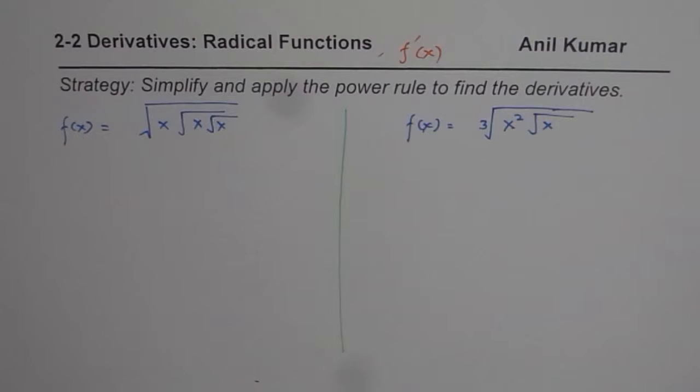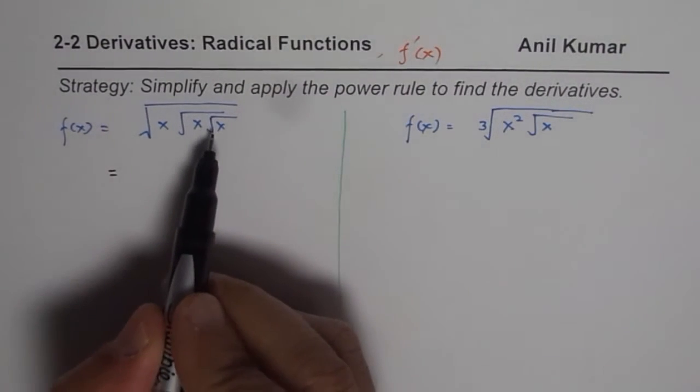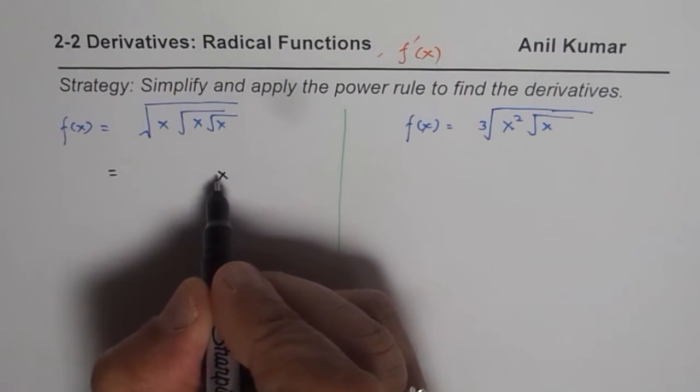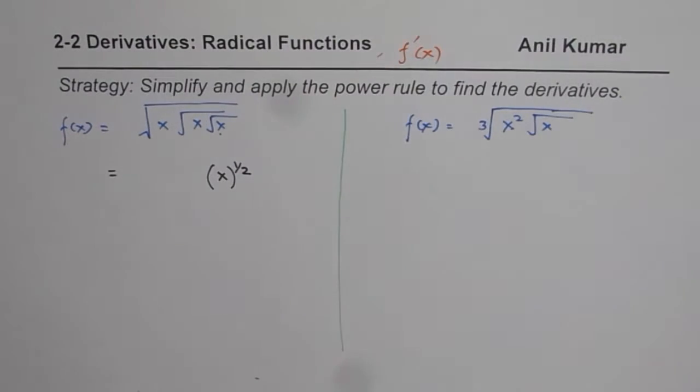Now such questions, what you should do is, you should write this radical in simpler form and I'll show you in this particular video how to do it. We start from the inside function which is square root of x. So I could write this as x to the power of half. So this is x to the power of half.